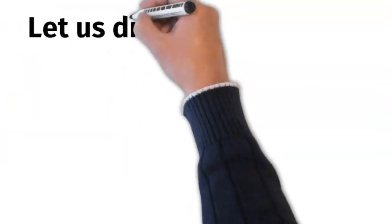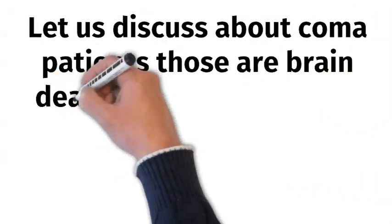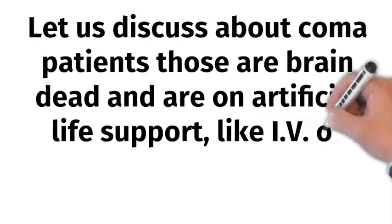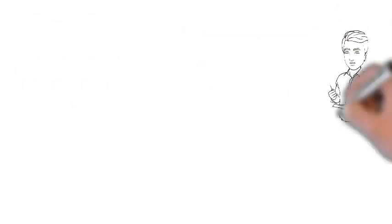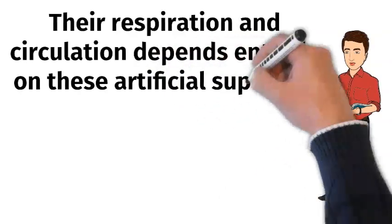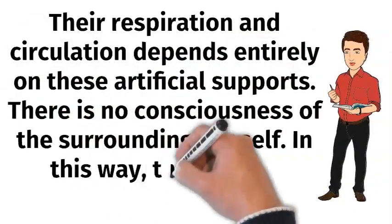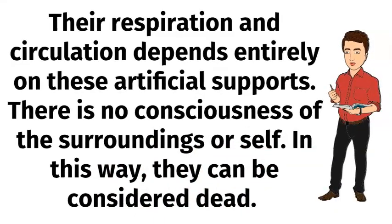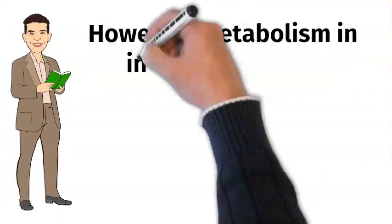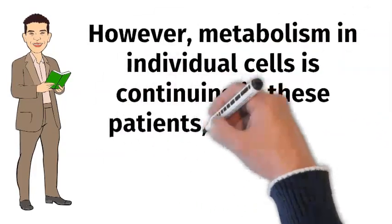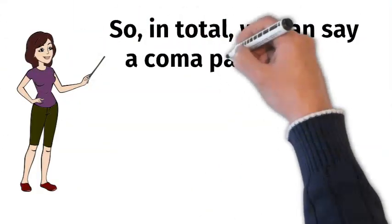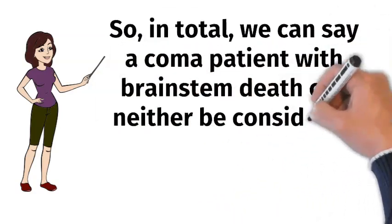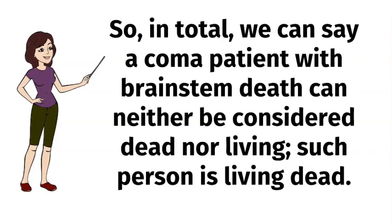Let us discuss coma patients who are brain dead and are on artificial life support like IV or parenteral nutrition and ventilators. Their respiration and circulation depend entirely on these artificial supports. There is no consciousness of the surroundings or self, so in this way they can be considered dead. However, metabolism in individual cells is continuing in these patients, so in this respect they can be considered as living. We can say a coma patient with brainstem death can neither be considered dead nor living — such a person is living dead.